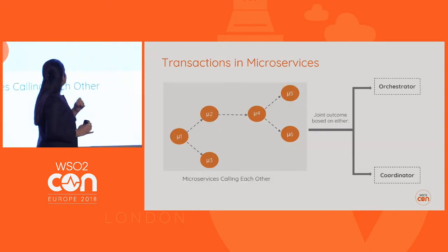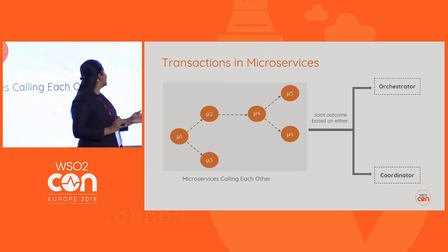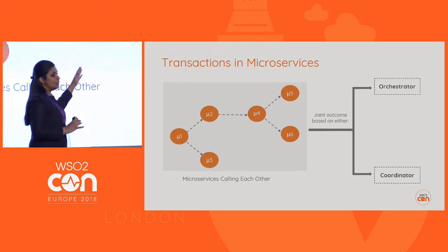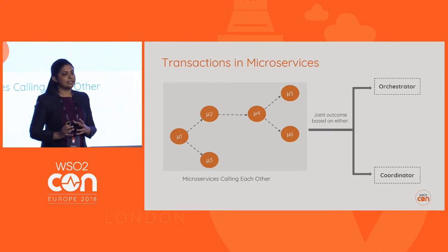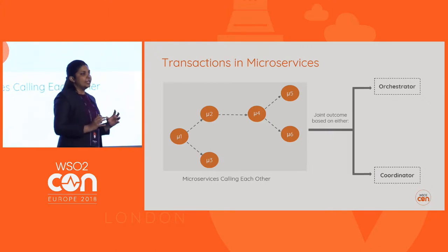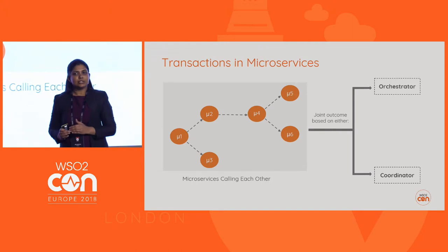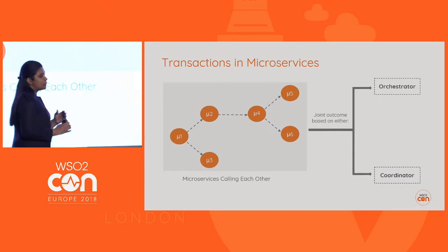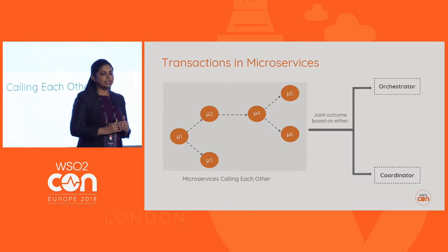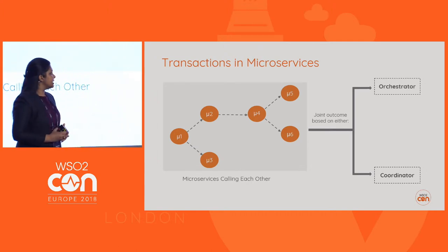In practical scenarios this problem can be very complex. For example, microservice 1 talks to 2 and 3, service 2 talks to 4, and 4 talks to 5 and 6. All six services are participating in the same business transaction, and we need to ensure that at the end of all interactions, they reach a conclusion — whether to abort or commit the transaction. We refer to that outcome as the joint outcome.